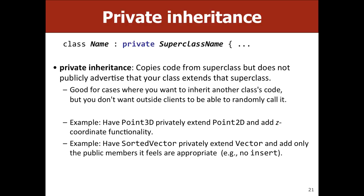For a square privately inheriting from a rectangle: drawing a square is basically the same as drawing a rectangle, and checking if an X, Y point is inside a square is the same as for a rectangle. So you'd want to reuse that code. But you'd want to hide the set-width and set-height methods, and a rectangle shouldn't have a set-side-length method. Private inheritance from GRect for GSquare would be a real-world use case.